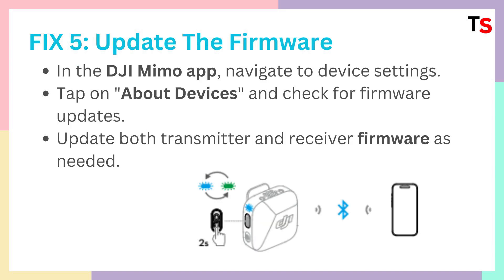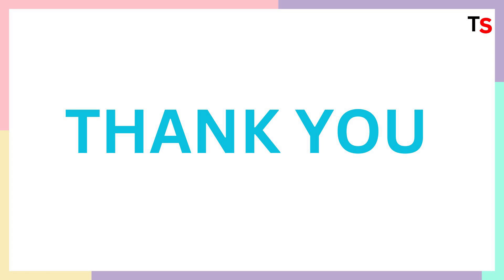Fix 5 is the last one: update the firmware. Whenever you update any device, it will automatically give you the best results and even new features added after the update. So make sure you update your devices. For that, go to the DJI MIMO app, navigate to Settings, and tap on About Devices. Then check for firmware updates — it will give an automatic pop-up — and completely update your mic.